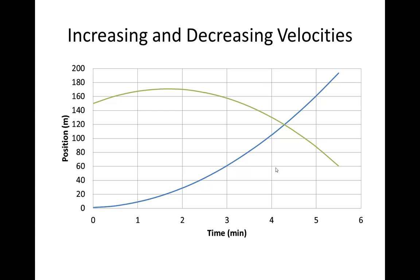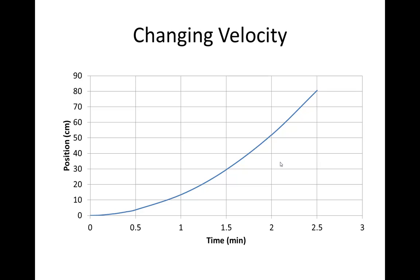So how do you deal with finding the velocity on these curved position-time graphs? Here's that positive changing velocity again. What you do is create tangent lines — in this case, tangent lines that touch the graph at just one point.